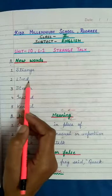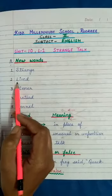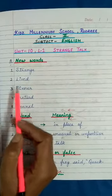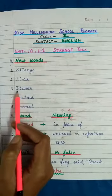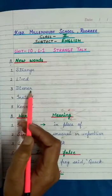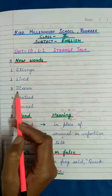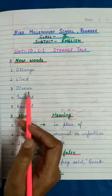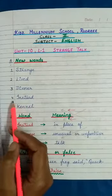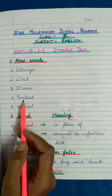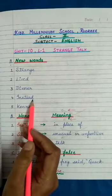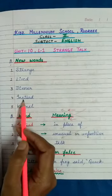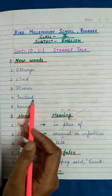Second: Lived. L-I-V-E-D. Lived. Third: D-I-N-N-E-R. Dinner. Fourth: Instead. I-N-S-T-E-A-D. Instead.